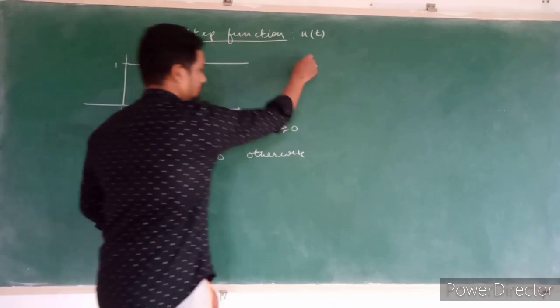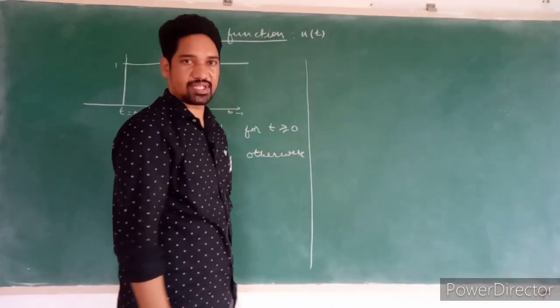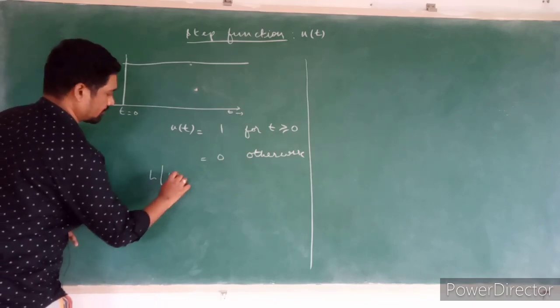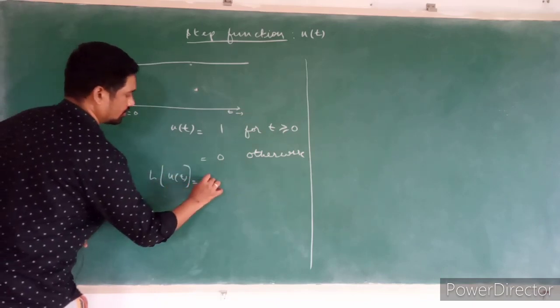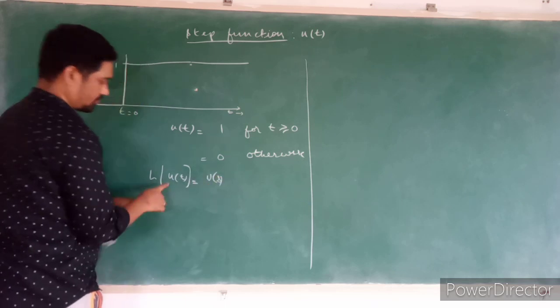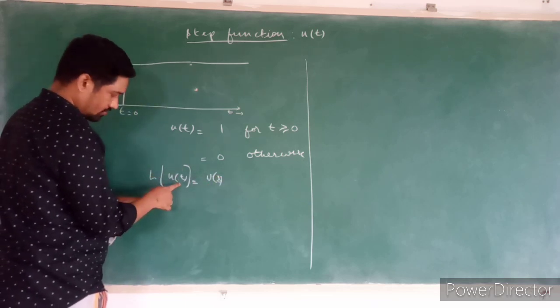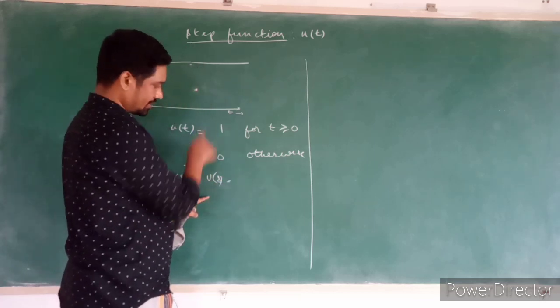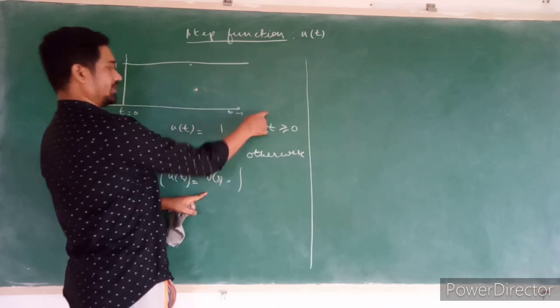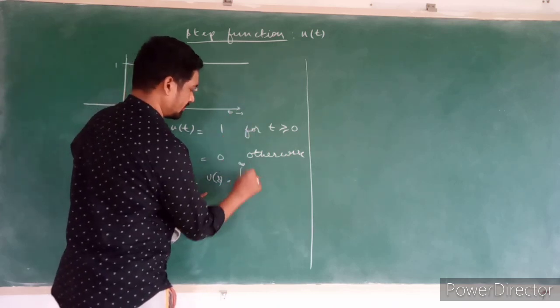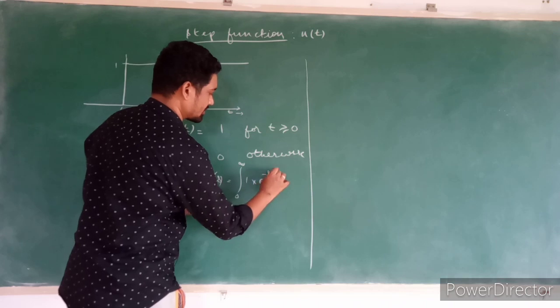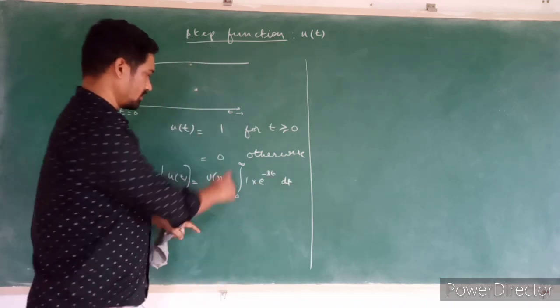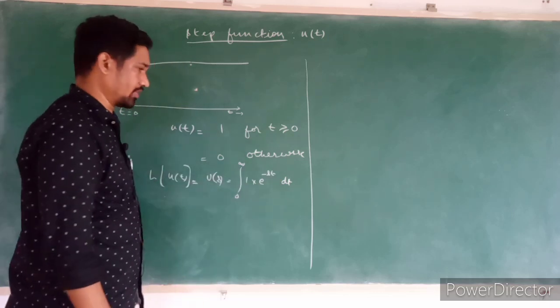So the Laplace transform of this one will be: Laplace transform of u(t) is equal to u(s). It is u(t) in the time domain and the Laplace transform will be in s domain, which will be in this case integral 0 to infinity, 1 into e raise to minus st dt. This is the equation to obtain the Laplace transform of the step function.